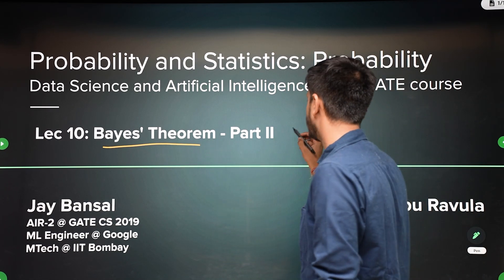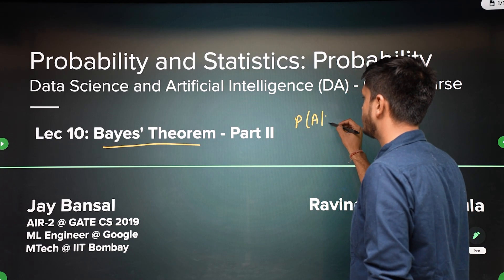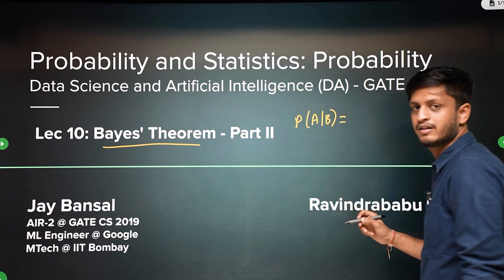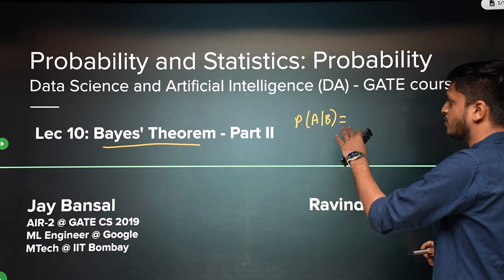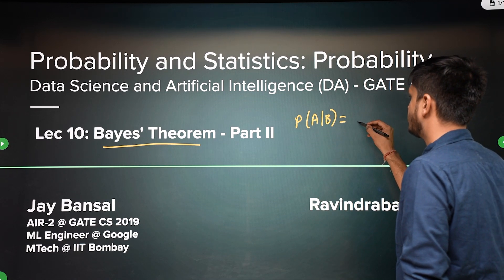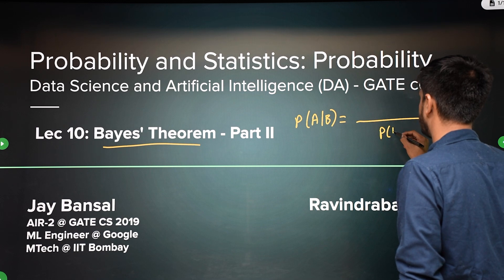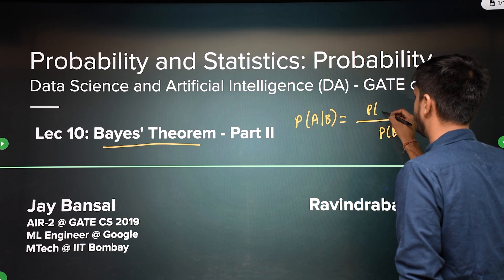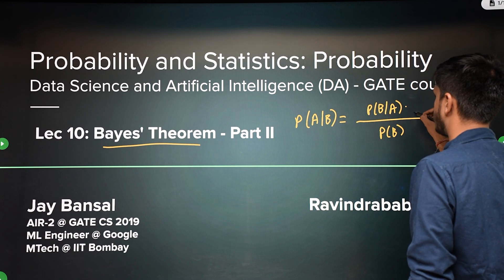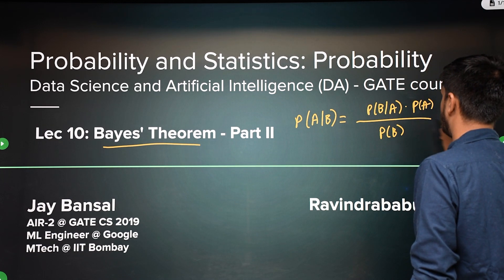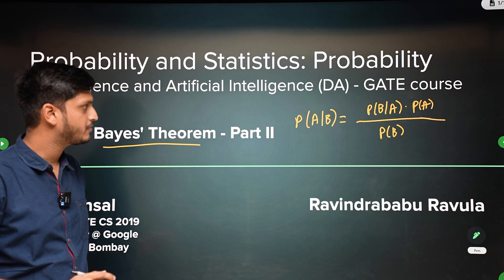Just to recap the theorem: we need to find the probability of A given B, but this is not very easy to find directly. So what we do is find the contribution of B in the probability of A. It is probability of B given A has already happened, times probability of A, upon probability of B. This is what Bayes theorem is.